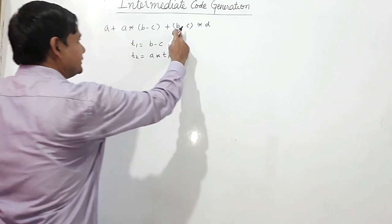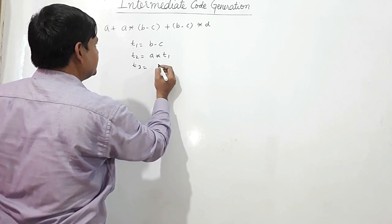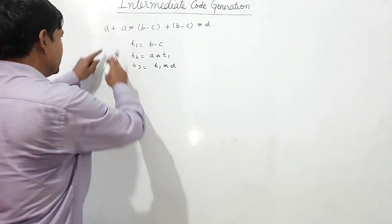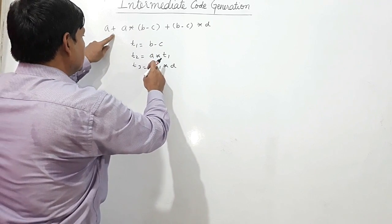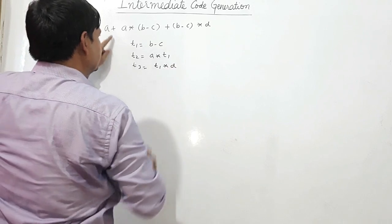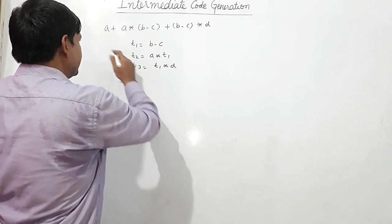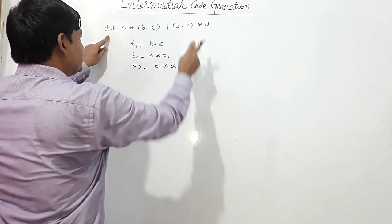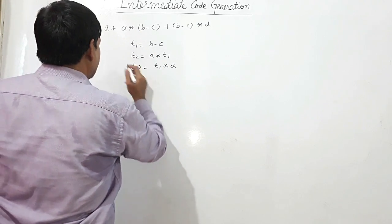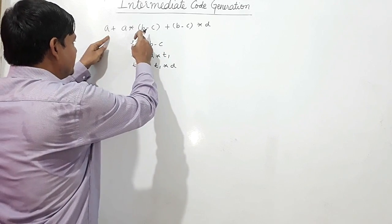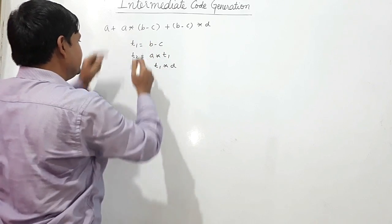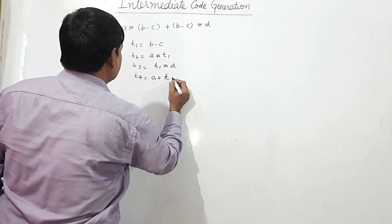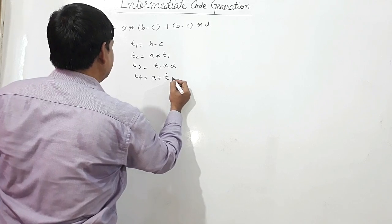Now I have to evaluate this expression. t3 is equal to t1*d. So now it will be a + t2 + t3. I will evaluate this because the plus sign is here, so t4 will contain a + t2.